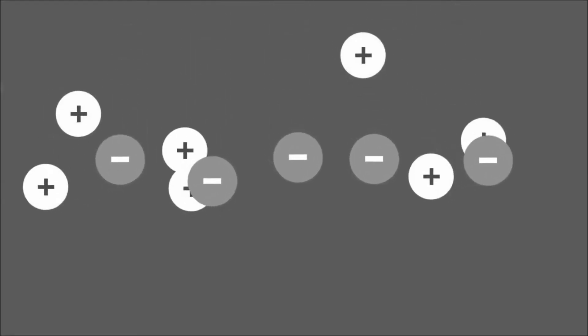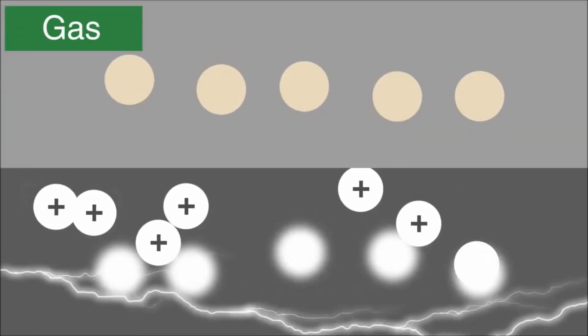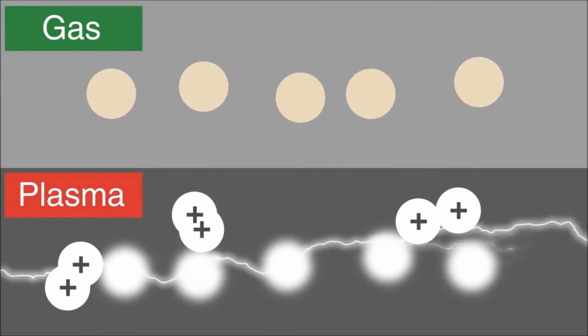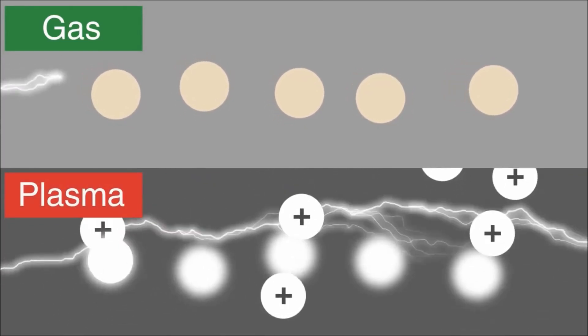Since free electrons are present, substances in plasma form can conduct electricity. This is what separates a gas from plasma. All gases cannot conduct electricity, but plasma can.